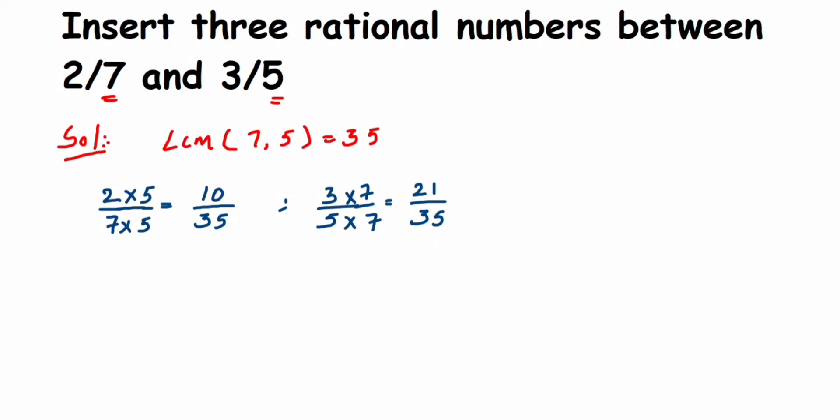From here we're going to conclude the answer. Since they're asking for only three, we're going to write only three rational numbers. So, three rational numbers between - remember 10/35 is an equivalent rational number of 2/7 - so between 2/7 and the other number is 3/5.